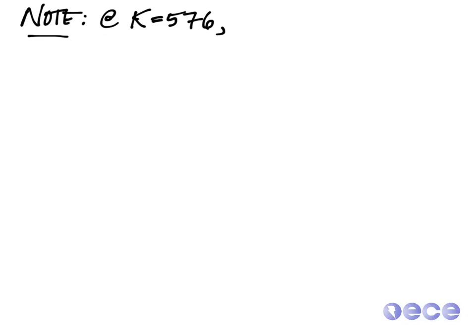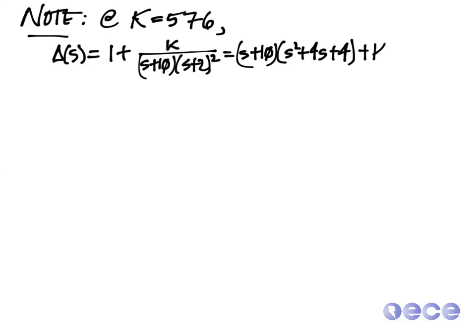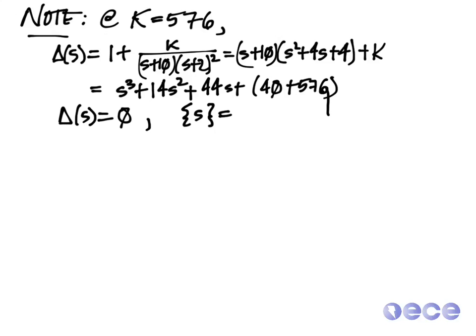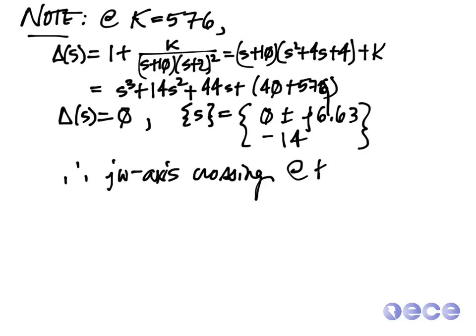By the way, if we choose K equals 576 and we plug this back into our characteristic equation delta of s with series gain K, and we multiply through all of the various polynomials, we get s cubed plus 14 s squared plus 44 s plus 616. If we solve for this, we have 0 plus or minus j 6.63. That is our point of marginal stability. This is exactly where we cross the j omega axis at K equals 576. That's a quick sanity check to make sure that we've chosen the right value of K.